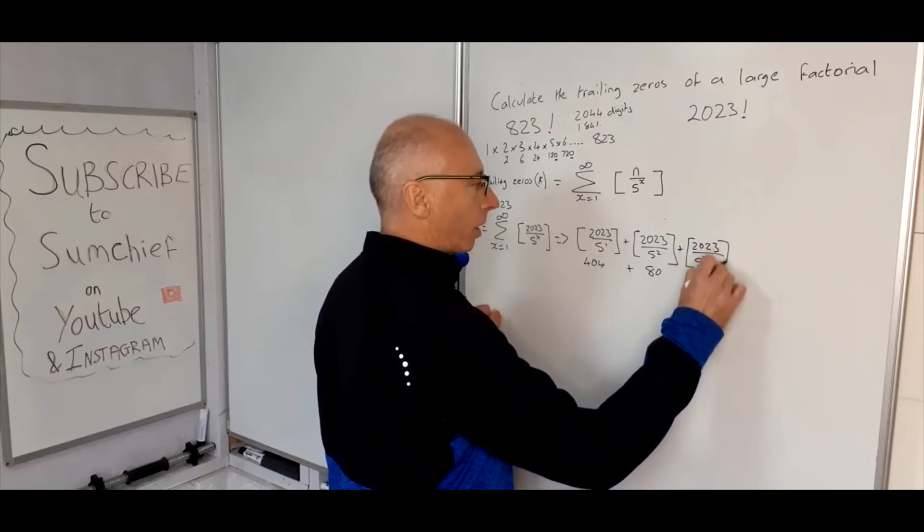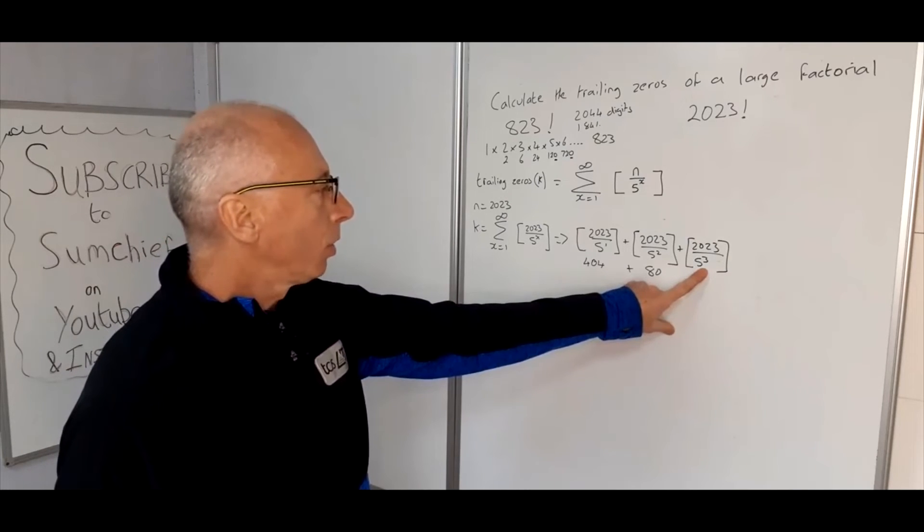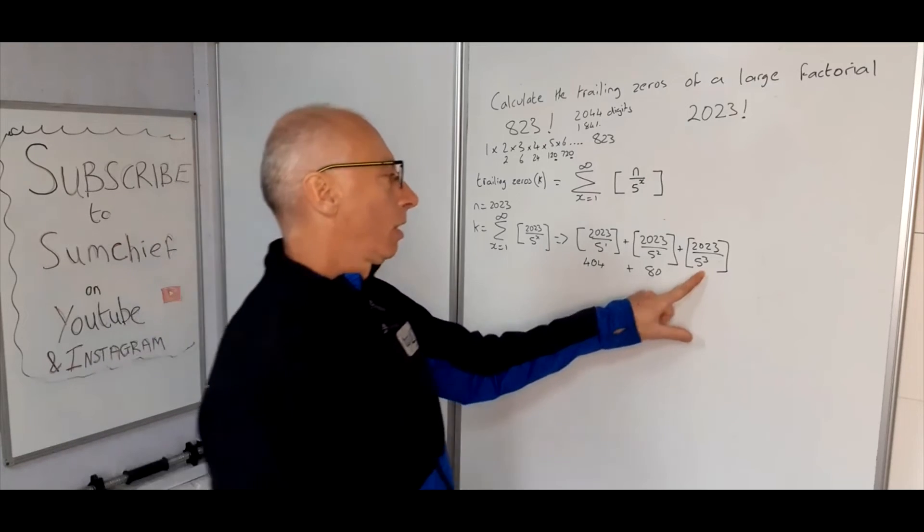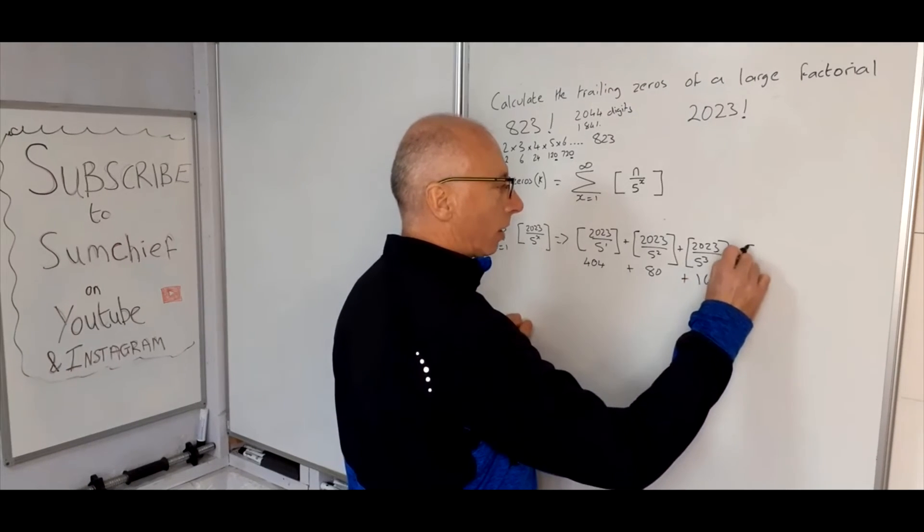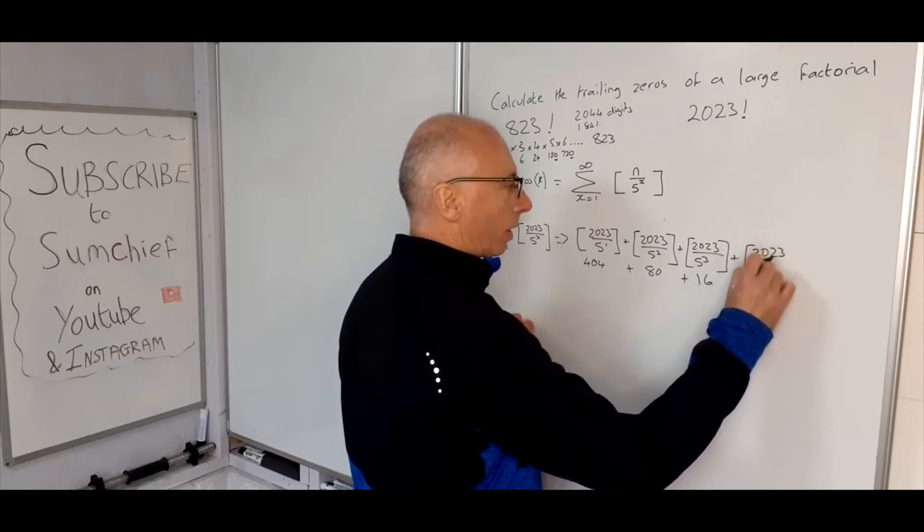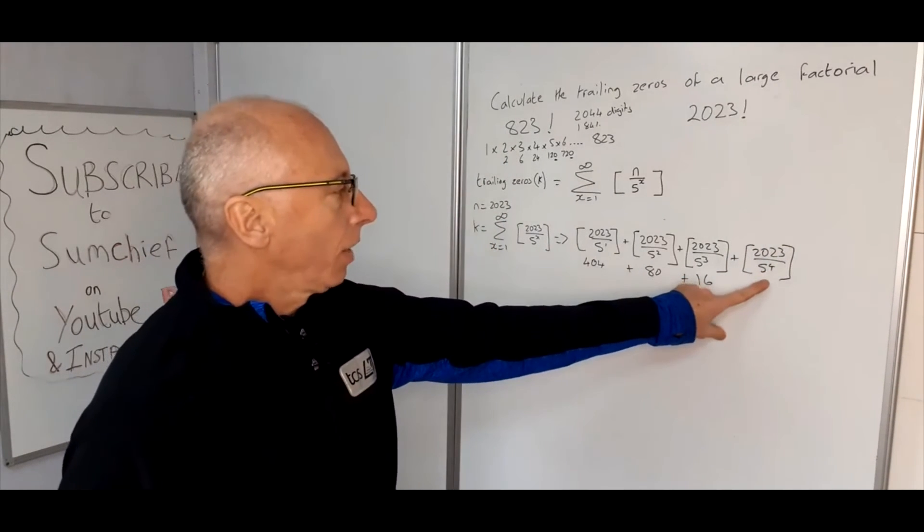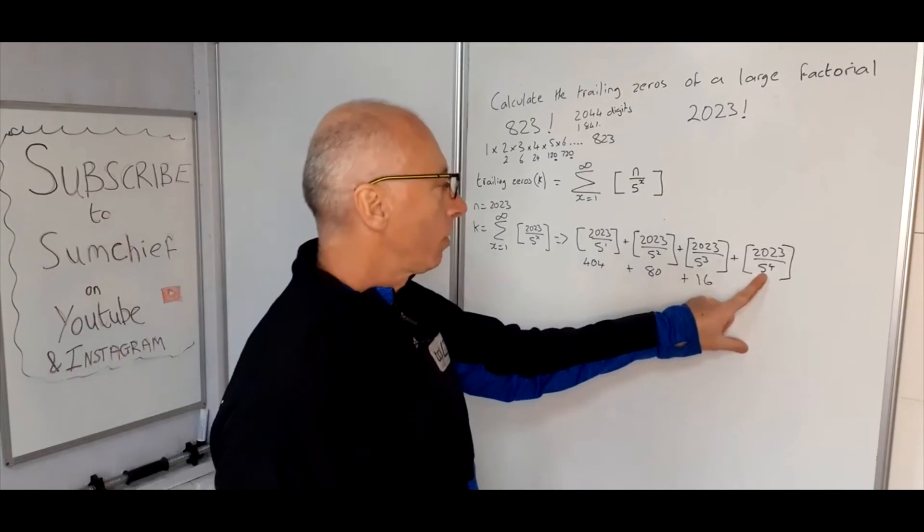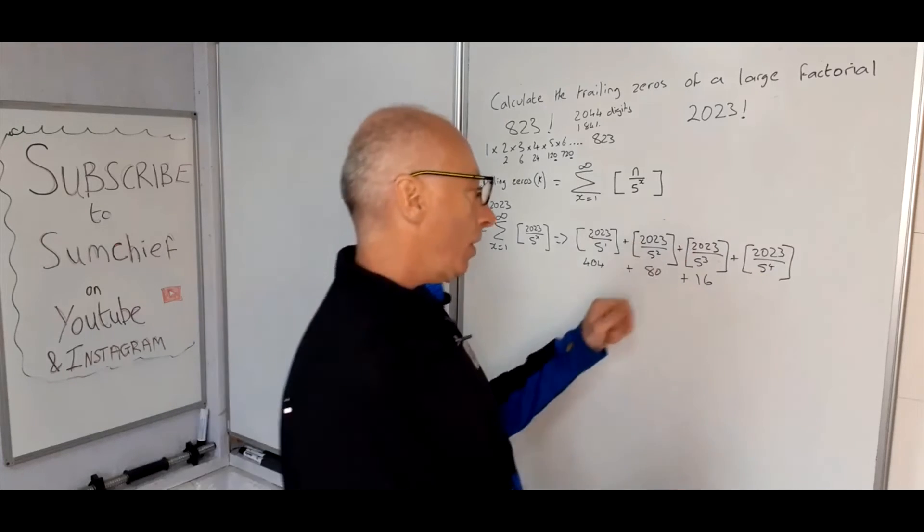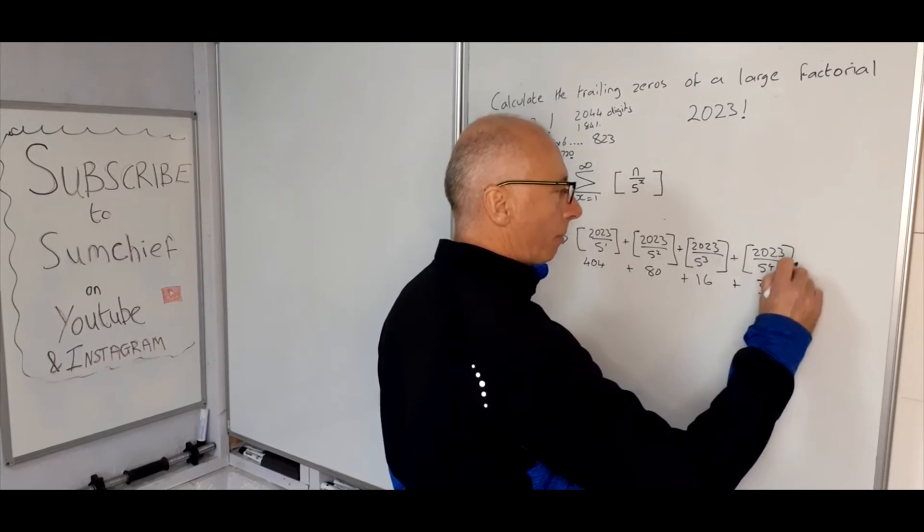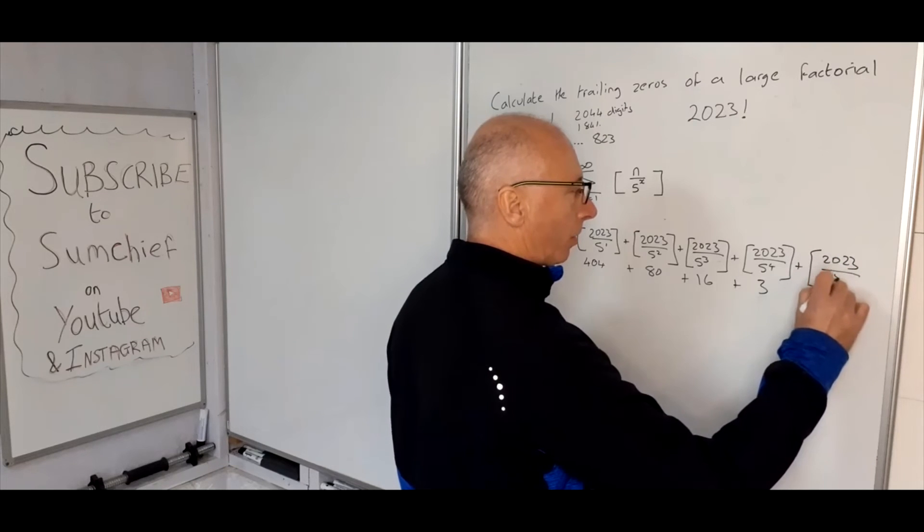2023 divided by 5 cubed. 5 cubed is 125. Now there's 8 times 125 per thousand, so that's then going to give us, as it's 2023, it's going to give us 16. Okay, 2023 divided by 5 to the power of 4. 5 to the power of 4 is 625, that's 25 squared. So 625 times 3 is going to give us 1875, so that will give us our greatest integer value for that one of 3.